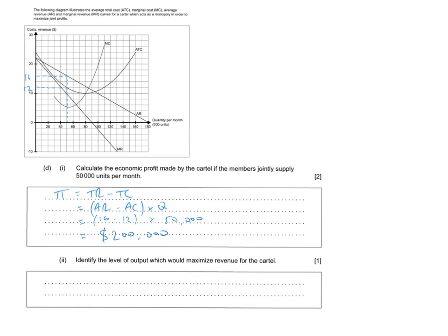Question D, part 2 asks us to find the level of output which would maximize the revenue of the cartel. So we know from our economic theory that revenue max occurs where MR equals 0. So on the diagram, there's our MR curve. Look at the quantity in which MR is 0, and we see that at this point, it's 90,000 units per month.